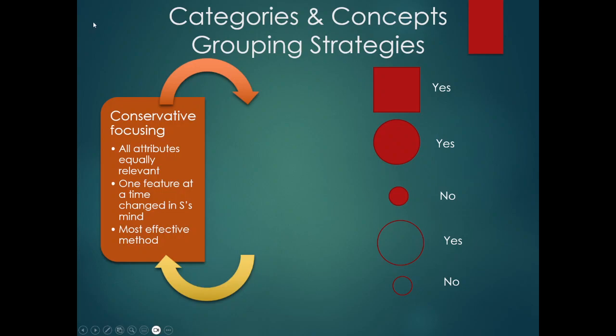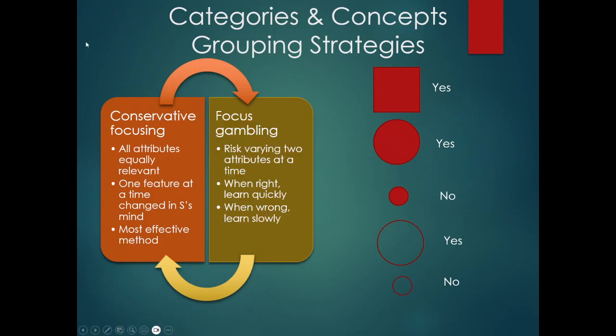I normally in class like to ask students, do you think this is what we naturally do most of the time? Because probably not. In real life, we probably don't change one variable at a time and see if it's still true or false. We kind of do a little bit more what we call focus gambling, where maybe we go ahead and risk varying two attributes at a time. When we're right, we learn the concept really quickly. But if we're wrong, we actually have to go back and try and figure out why we're wrong.